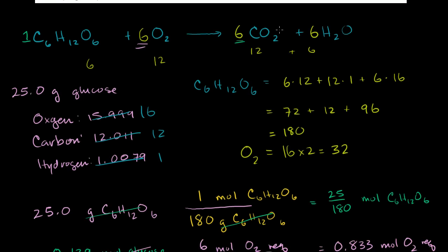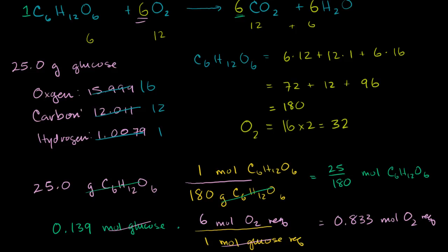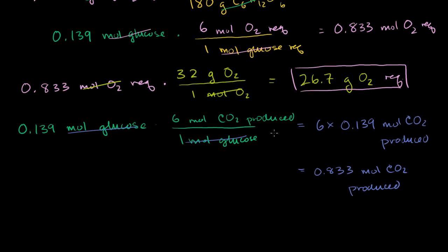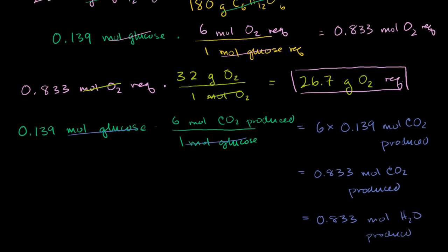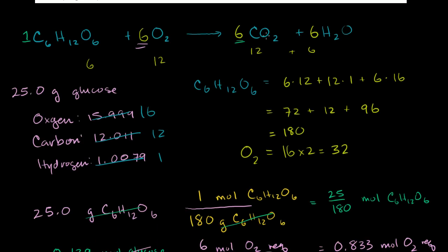By the same logic, we would perform the exact same calculation for water. For every mole of glucose used you produce one mole of CO2 and one mole of water — it's a one-to-one ratio between CO2 and H2O. So you're also going to have 0.833 moles of water produced.